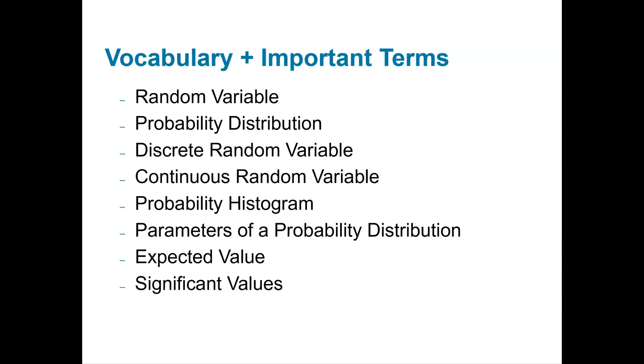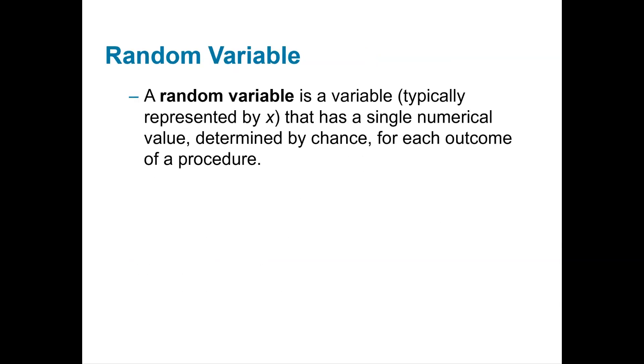These are the vocabulary and important terms for this section. A random variable is a variable that has a single numerical value determined by chance for each outcome of a procedure.